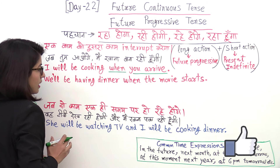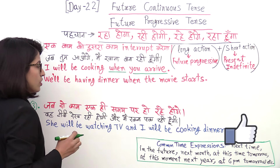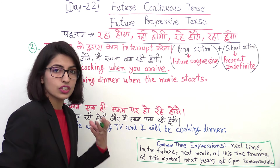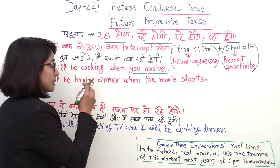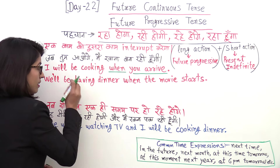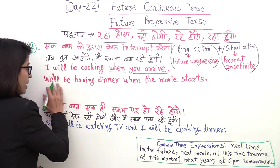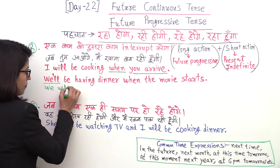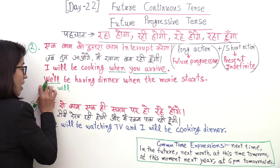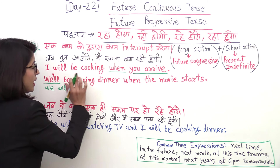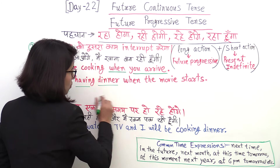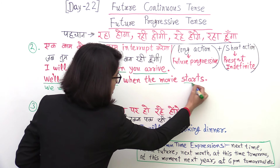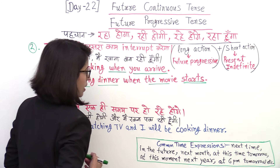Another example: When the movie starts, what will you be doing? The answer is: when the movie starts, we will be having dinner. So 'we will be having dinner' is Future Progressive, and 'when the movie starts' is Present Indefinite. The movie starting is the short interrupting action, so it is made Present Indefinite.